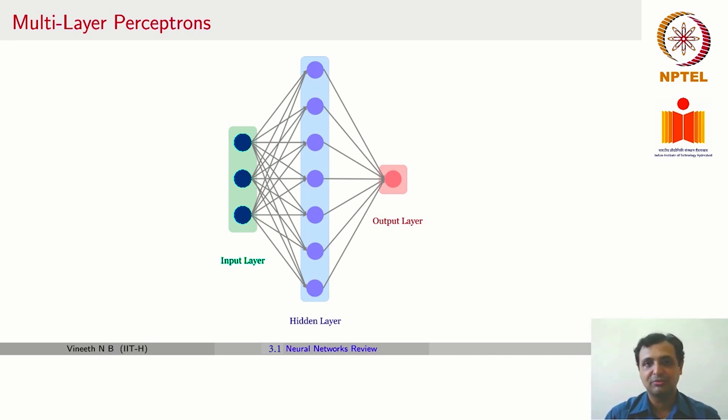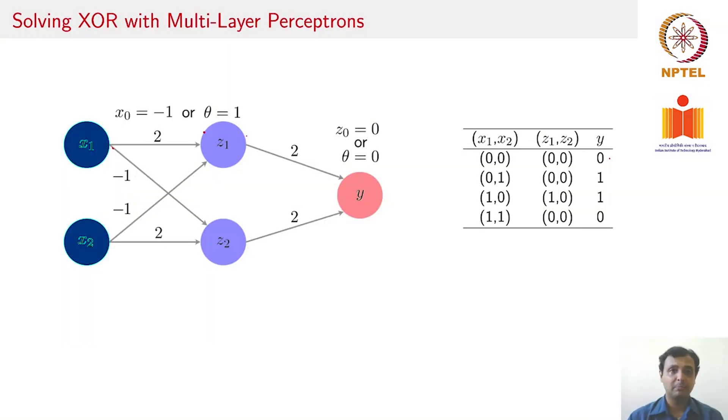A multi-layer perceptron, as the figure shows, is not restricted to only an input layer and output layer but also has the convenience of including a hidden layer of neurons. The number of neurons in this hidden layer is a design decision. Here is an example of how multi-layer perceptron can be used to solve the XOR problem. Let us look at this example.